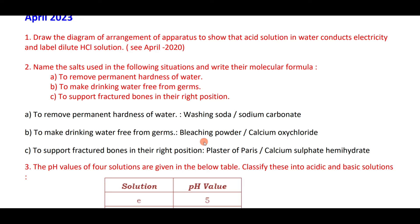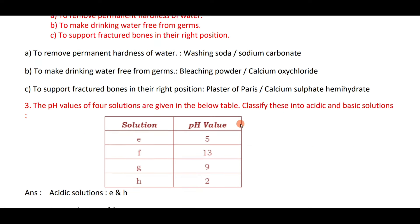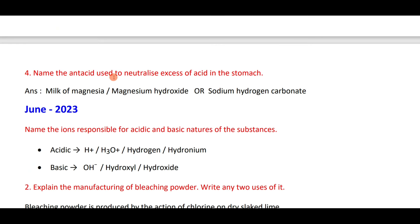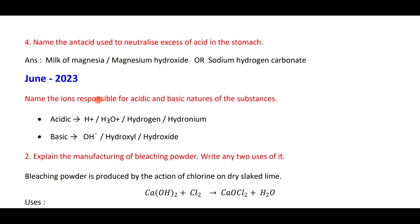Among pH values given, more than seven is basic and less than seven is acidic. The antacid used to neutralize excess acid in the stomach is milk of magnesia — magnesium hydroxide — or sodium hydrogen carbonate. The ions responsible for acidic and basic nature: acids have H⁺ ions (hydronium ions); bases have OH⁻ ions (hydroxide ions).